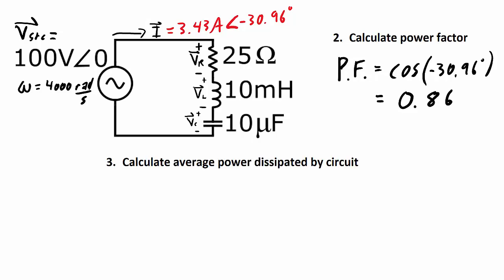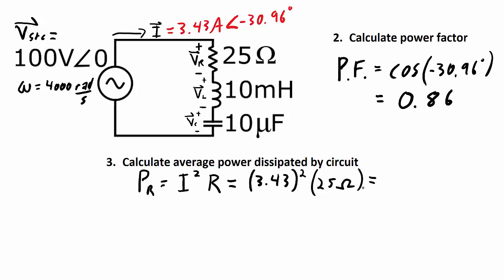The third thing is to calculate the average power dissipated by the circuit. Only resistors actually dissipate power — inductors and capacitors have reactive power, which gets absorbed and then returned to the circuit. Power dissipated by the resistor is the current squared times the resistance. Using the RMS values, that's 3.43 amps squared times 25 ohms, which works out to a power dissipation of 294.1 watts.